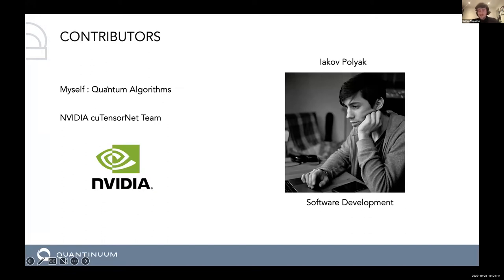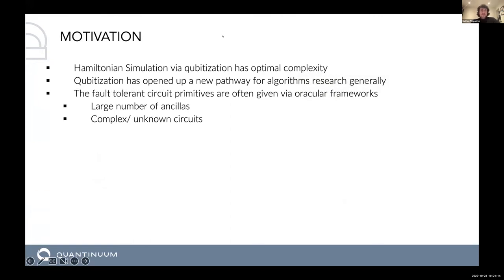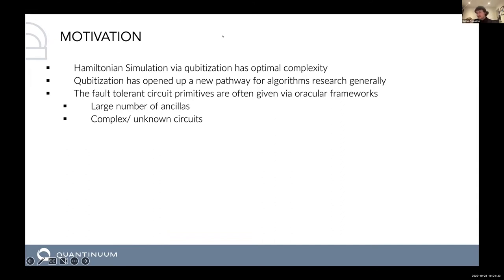Hamiltonian simulation by qubitization is very enticing because it's known to have optimal complexity in terms of Hamiltonian simulation when you compare it to Trotter and truncated Taylor series methods. Furthermore, it's opened up a new pathway for algorithms research generally — you may have heard of the 'grand unification of quantum algorithms,' which is all based upon this qubitization framework. The problem with these methods is that they're often expressed in somewhat opaque frameworks with large numbers of ancillas and complex, unknown circuits.